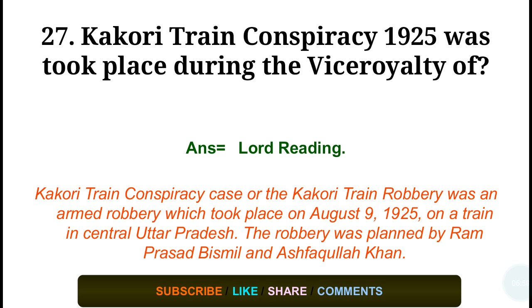Question number twenty-seven: The Kakori Train Conspiracy in 1925 took place during the viceroyalty of — answer: Lord Reading. The Kakori Train Conspiracy was an armed robbery which took place on August 9, 1925, on a train in central United Provinces. The robbery was planned by Ram Prasad Bismil and Ashfaqullah Khan.